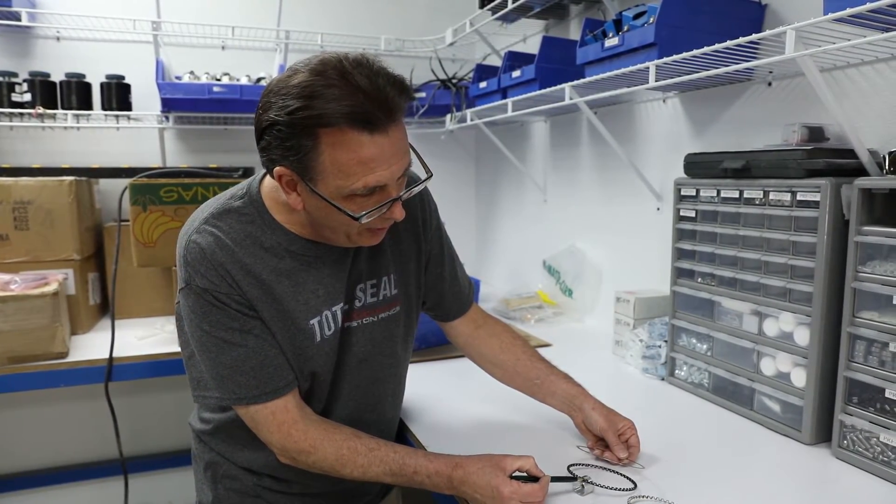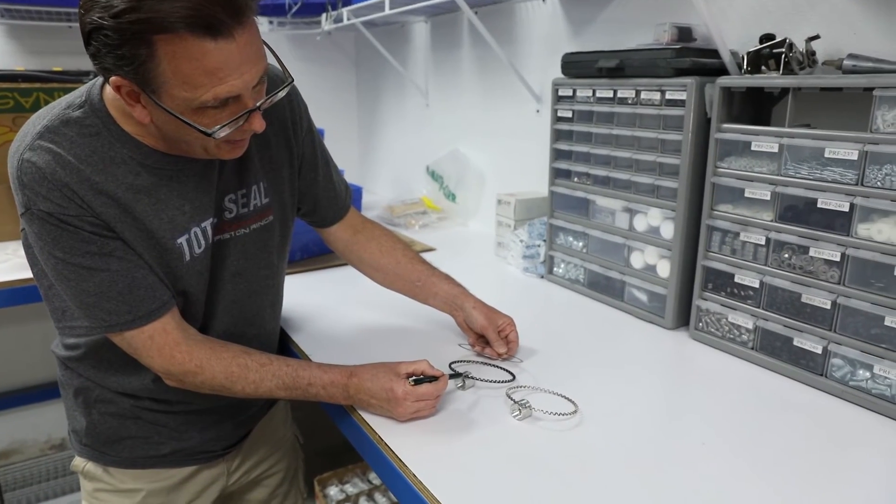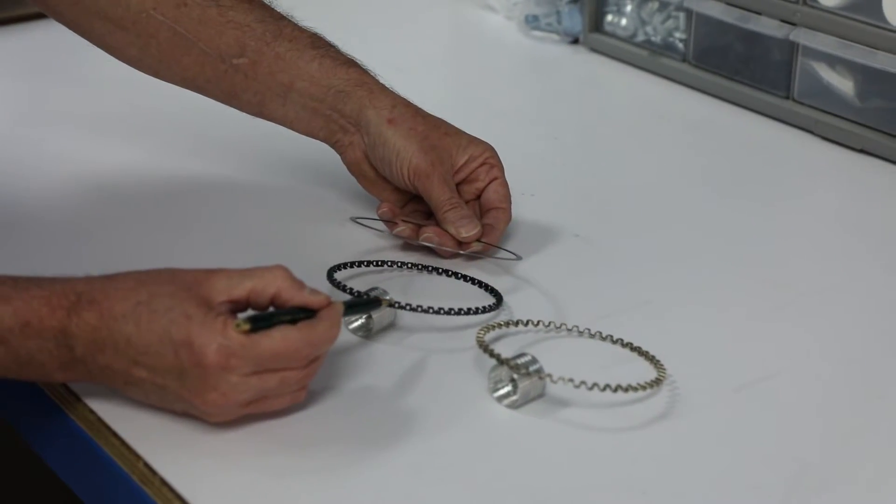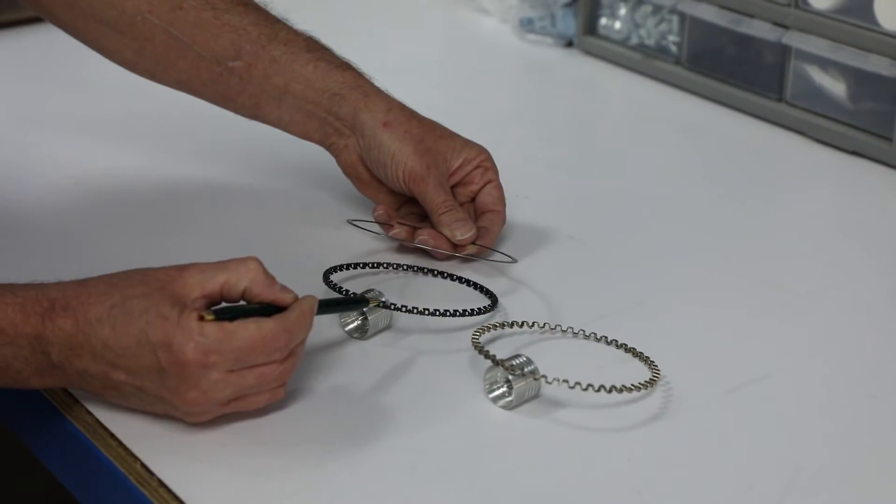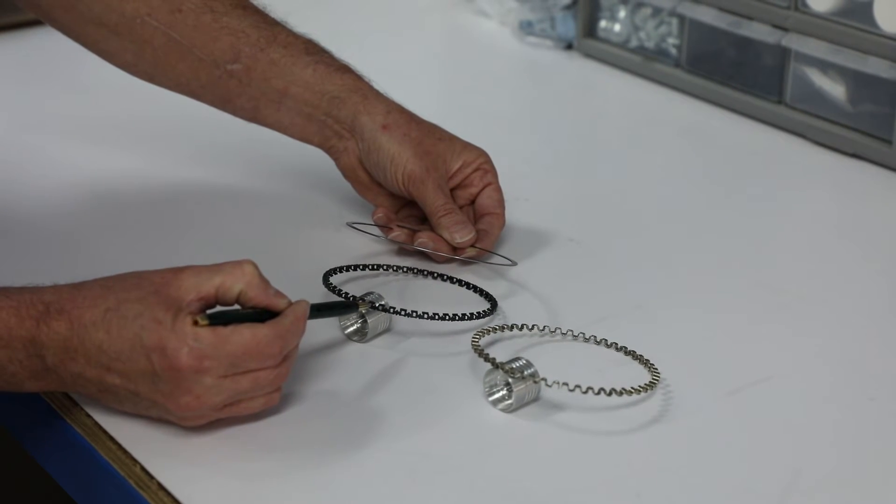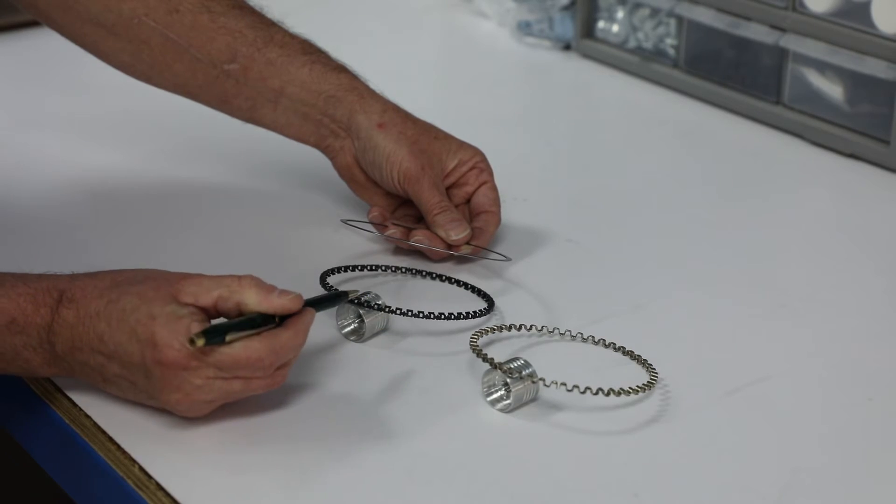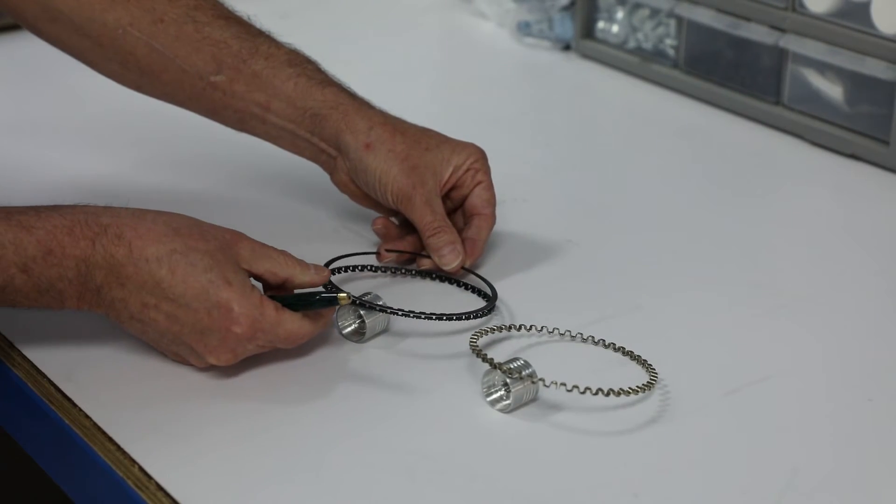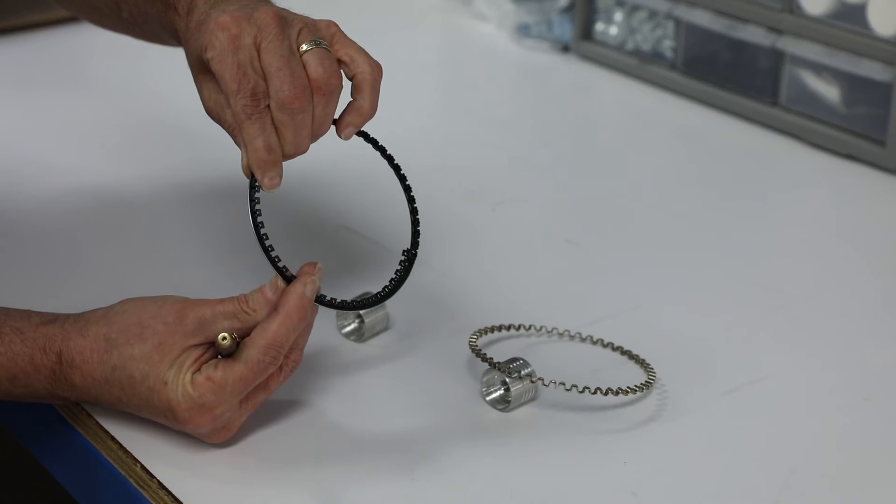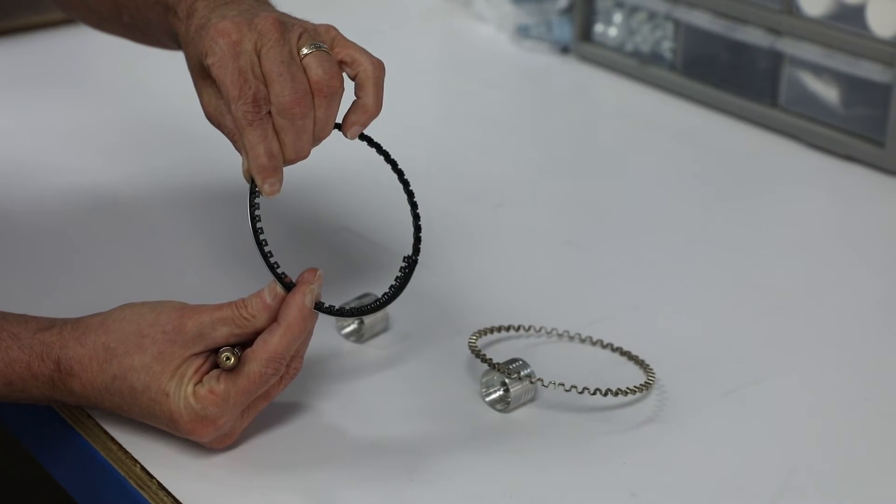And if you take a really good look here, what you'll see is there's literally no unsupported areas. You've got the wave in the bracelet, and then you've got a bridge out near the face of the oil ring rail that supports the oil rail. So the oil rail is completely supported.